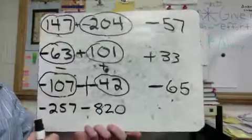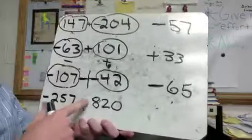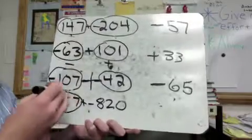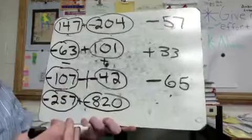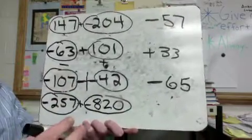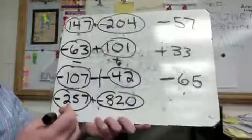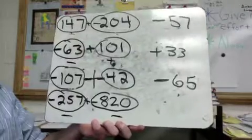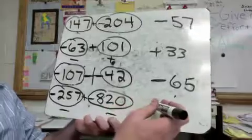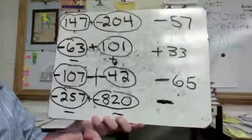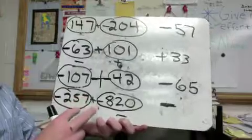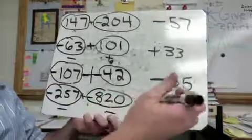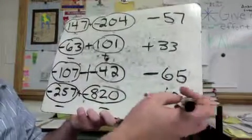Last practice problem: we need to format this one correctly too, sneaking the plus in at the back. Now we have negative 257 and negative 820 — both are negative, so there's no canceling involved. We just ask how many negatives we have altogether. My final answer is negative, and adding 257 and 820 together gives 1,077, so the answer is negative 1,077.